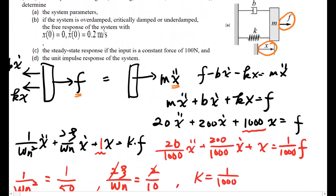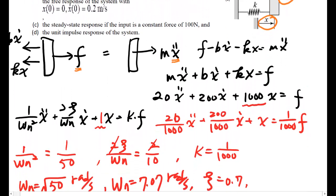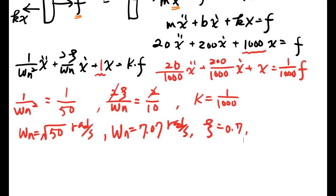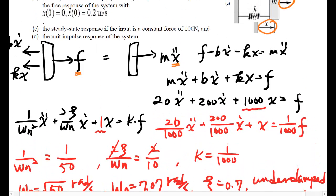Now, for system response, if the damping ratio is smaller than one, the system will have oscillation. It's an underdamped system. Free response.